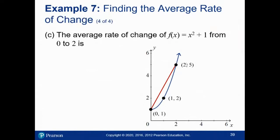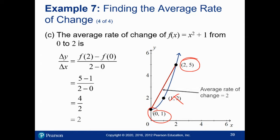And finally, if I go from 0 all the way to 2, this point here is no longer relevant. I'm just using these two points. So F of 2 is 5, F of 0 is 1 over 2 minus 0, 4 over 2 or 2.